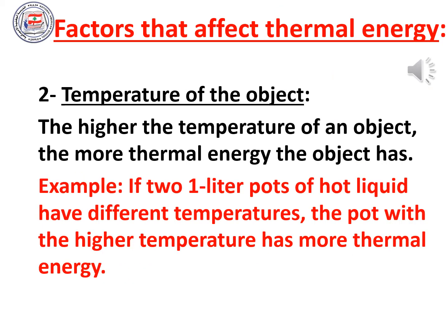The second factor that affects thermal energy is the temperature of the object. The higher the temperature, the more thermal energy the object has. For example, if two 1-liter pots of liquid have the same number of particles but different temperatures, the pot with the higher temperature has more thermal energy. In section 3, you will learn about how thermal energies differ for solids, liquids, and gases, which is linked to the third factor.